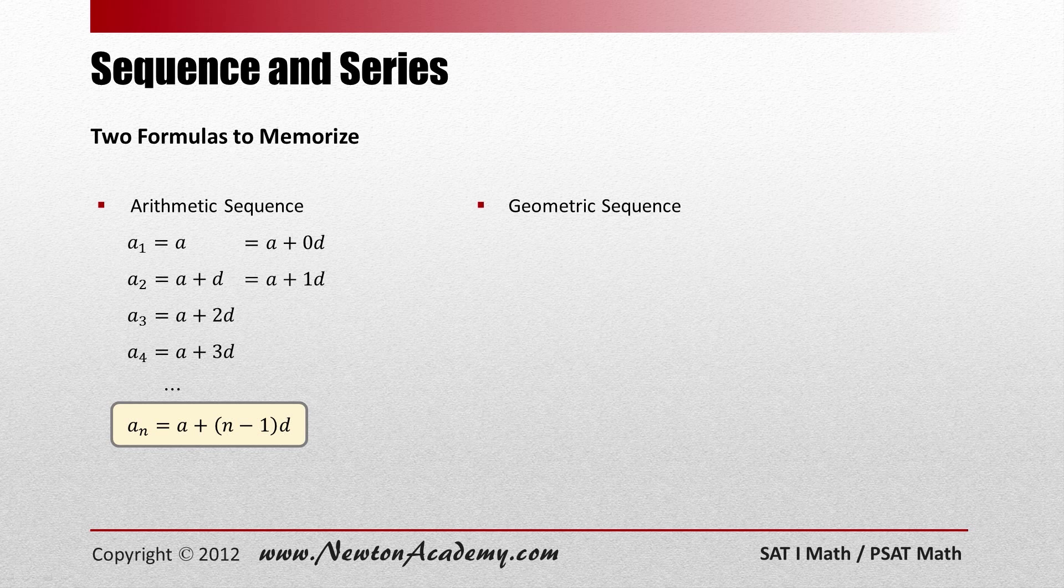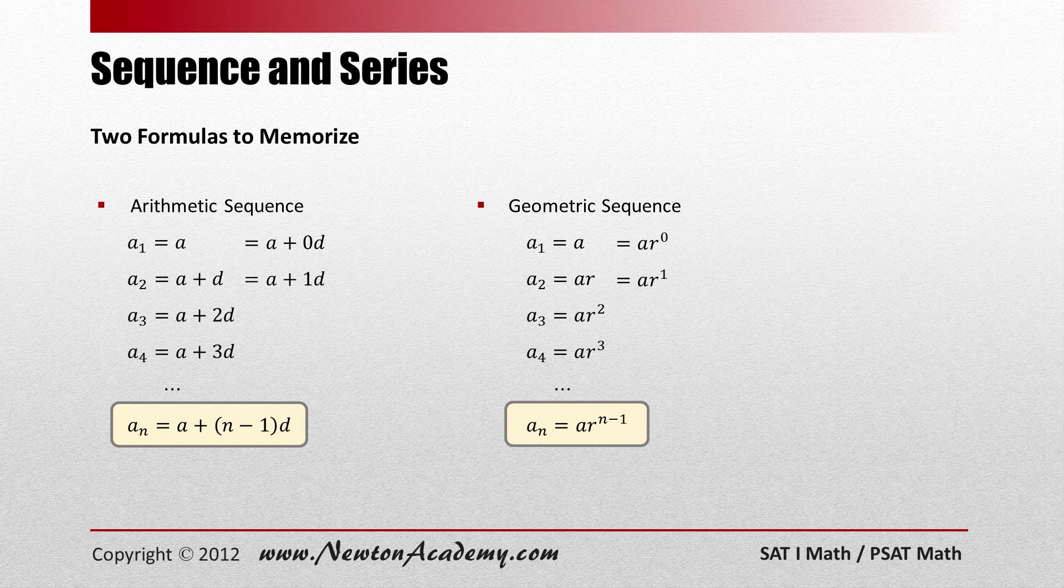Now geometric sequence. Let's say that the first term is A. If you multiply a common multiplier R to that first term A, you get the second term. For the third term, you multiply another R to the second term. For the fourth term, you multiply another R to the third term and so on. To be able to see the pattern more clearly in this case also, let's express this A sub 1 with A times R to the 0 power and A sub 2 with A times R to the 1 power. Then you can see that when this is 1, this is 0. When it's 2, this is 1. When it's 3, this is 2. When it's 4, this is 3. Now you see the pattern again. The nth term A sub N is going to be A times R to the N minus 1 power.